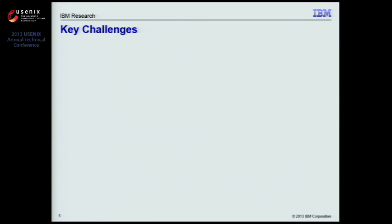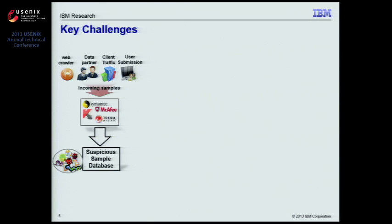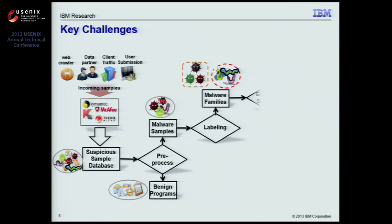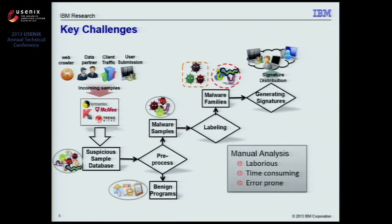This huge influx of malware programs has created key challenges for AV companies: how can they process this number of malware and deploy mitigation techniques to protect their end users? AV companies usually receive thousands or even tens of thousands of malware samples from various collection channels. These samples have to be processed and analyzed by malware analysts to create signatures to be distributed to end users. However, this overwhelming number of new samples puts severe strain on the limited resources in AV companies, making them less responsive to new threats.